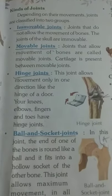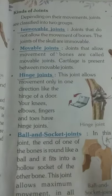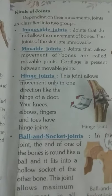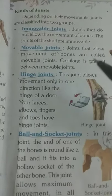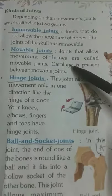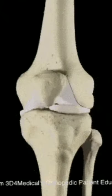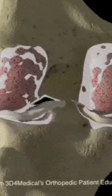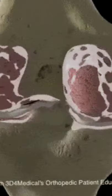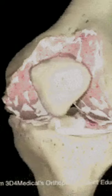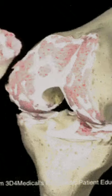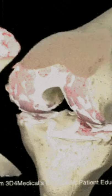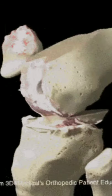The ribcage protects the heart and lungs. Then we discussed about kinds of joints — some are immovable, some are movable. In the case of movable joints: hinge joint, ball and socket joint, pivot joint, and gliding joint. We already discussed how we can cure these joints.